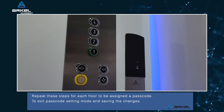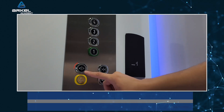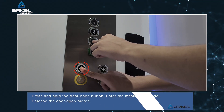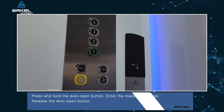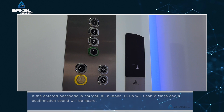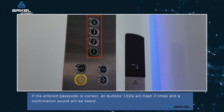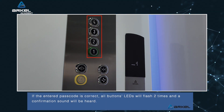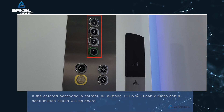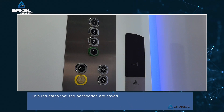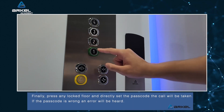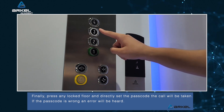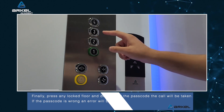To exit passcode setting mode and save the changes, press and hold the door open button, enter the master passcode, then release the door open button. If the entered passcode is correct, all button LEDs will flash two times and a confirmation sound will be heard, indicating that the passcodes are saved. Finally, press any locked floor button and directly enter the passcode. The call will be taken. If the passcode is wrong, an error sound will be heard.